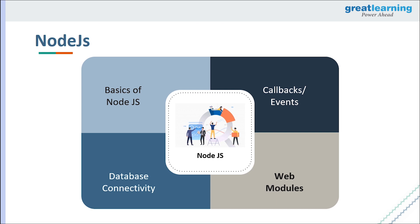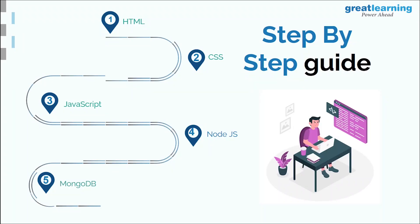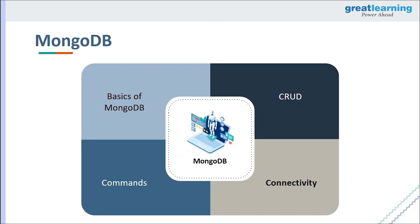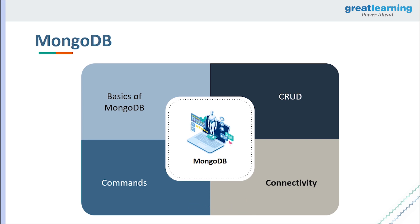The fifth and final step is MongoDB, a document-oriented database. Unlike traditional relational databases with tables and relations, MongoDB excels at scalability. It stores data in a way that is easy for both computers and humans, and provides scalability, fault tolerance, and flexibility. You should learn MongoDB basics, CRUD operations (create, read, update, delete), basic commands, and how to connect MongoDB with NodeJS.